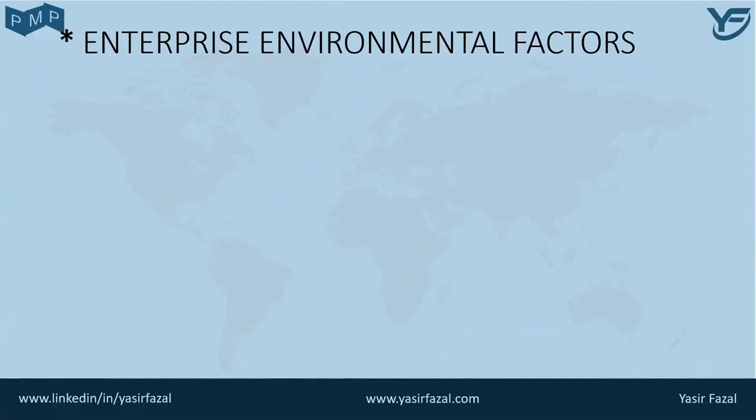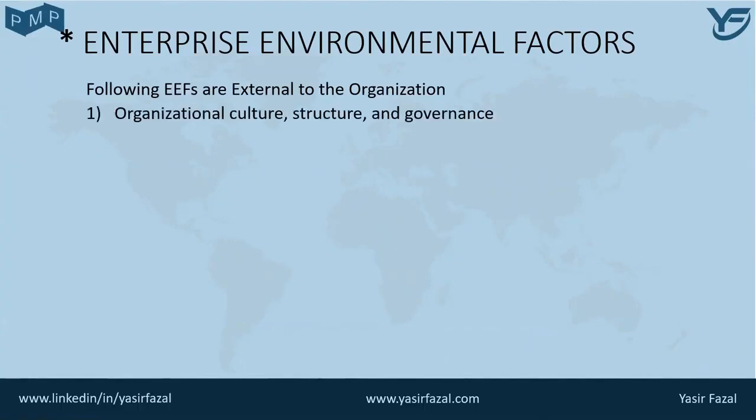One category is organizational culture, structure, and governance. For example, this includes the vision, mission, beliefs, cultural norms, values, leadership style, hierarchy and authority relationships, organizational styles, ethics, and code of conduct.